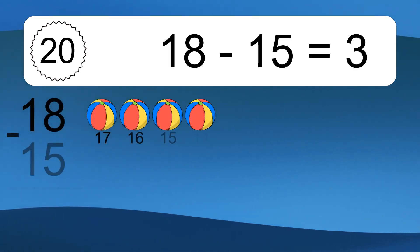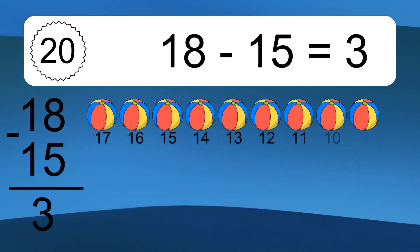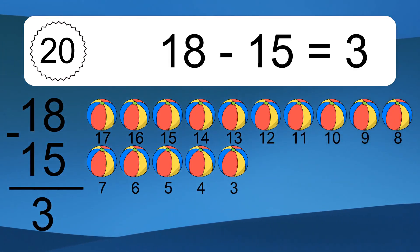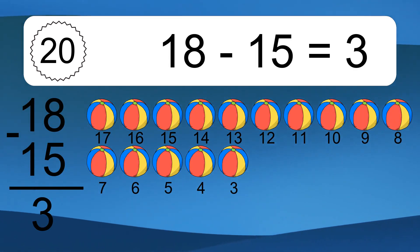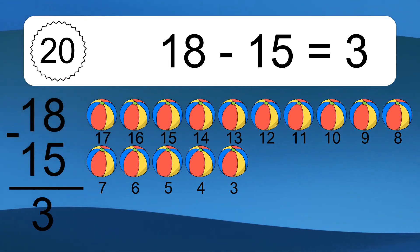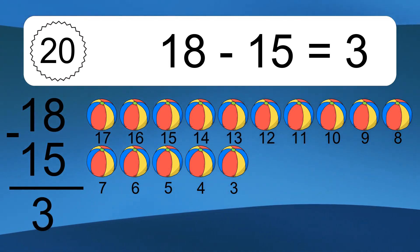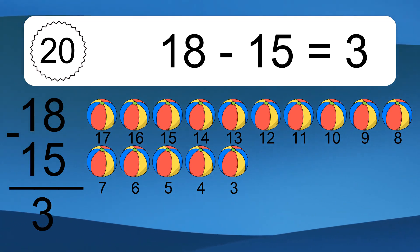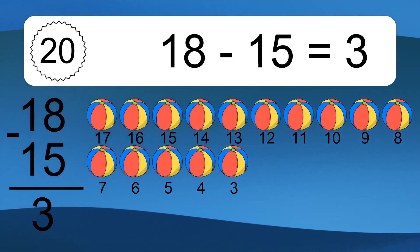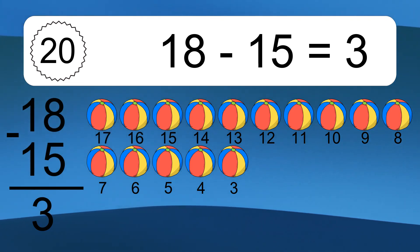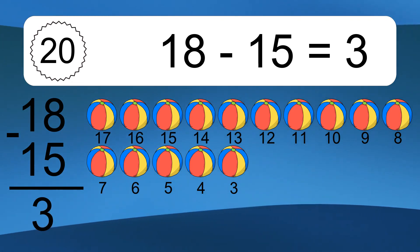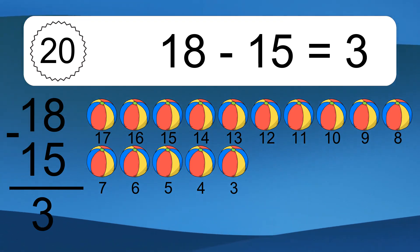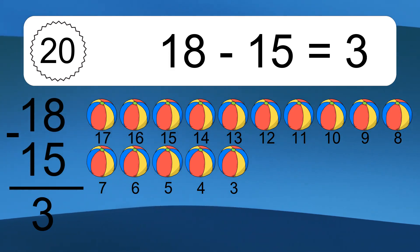18 minus 15 equals what? 18 minus 15 equals 3. Let's count it. 17, 16, 15, 14, 13, 12, 11, 10, 9, 8, 7, 6, 5, 4, 3.